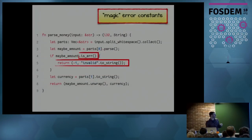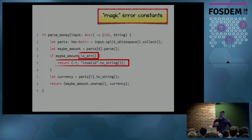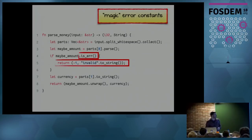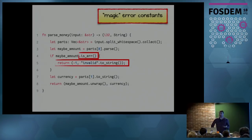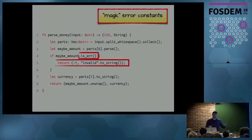Can it work? Sure. Is it beautiful? No. Why not? We have this explicit error check — a branch — creating mental overhead to remember something can go wrong. We also have this magic number -1, which you need to remember is not a correct value. And 'invalid' as a currency? Well, somebody could invent a currency called 'invalid' — bad luck for us. Most people in the community would agree: this is not how you write solid Rust code.